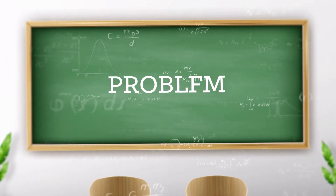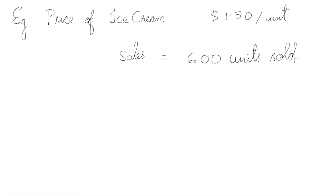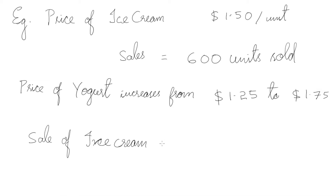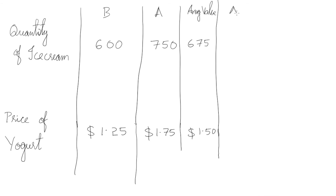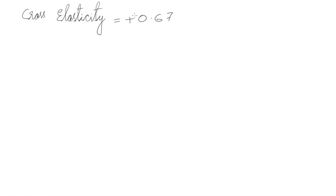Let's look at a problem. Ice cream is sold at $1.50 a unit and 600 units are sold every day. The price of yogurt increases from $1.25 to $1.75. The sale of ice cream changes from 600 units per day to 700 units per day. We find the quantity change in ice cream and the price change in yogurt, divide each change by the average value, and calculate the cross elasticity. Since the cross elasticity is positive, ice cream and yogurt are substitutes.